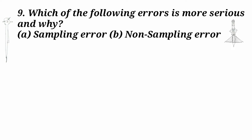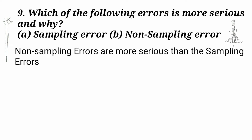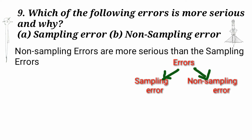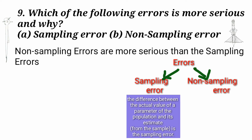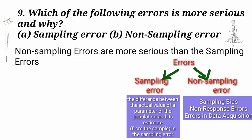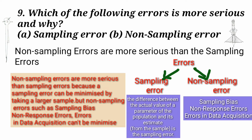Which of the following errors is more serious and why? 1. Sampling error. 2. Non-sampling error. Non-sampling errors are more serious than the sampling errors. The difference between the actual value of a parameter of the population and its estimate from the sample is the sampling error. Non-sampling errors are more serious than sampling errors because a sampling error can be minimized by taking a larger sample. But non-sampling errors such as sampling bias, non-response error, and errors in data acquisition cannot be minimized.